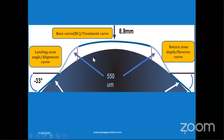The third point is the landing zone angle. It is the area where the lens first touches the cornea tangentially. The primary function of this alignment curve is to provide appropriate edge lift. This is very important for orthokeratology fitting.